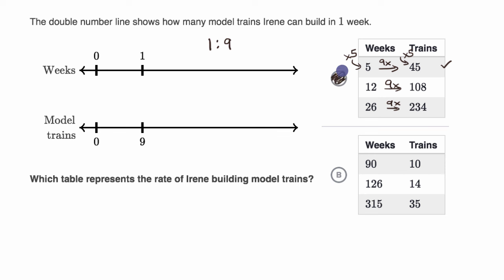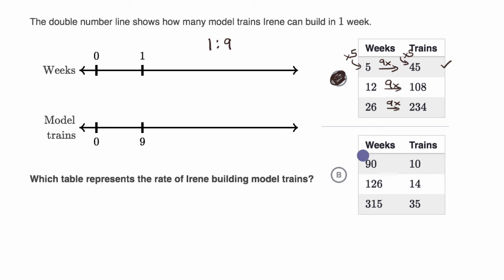Let's just make sure the other table doesn't work. Over here, the ratio of weeks to trains is nine to one, not one to nine. The trains should be nine times the weeks, but here the weeks are nine times the trains. So just looking at that first row, we know this table is not going to work out.